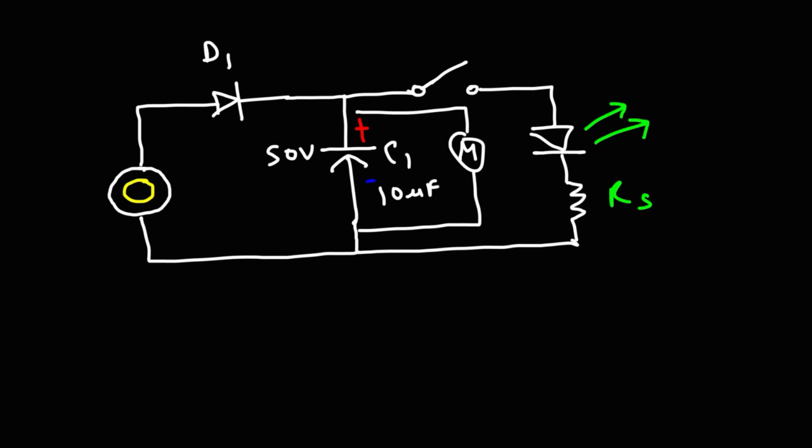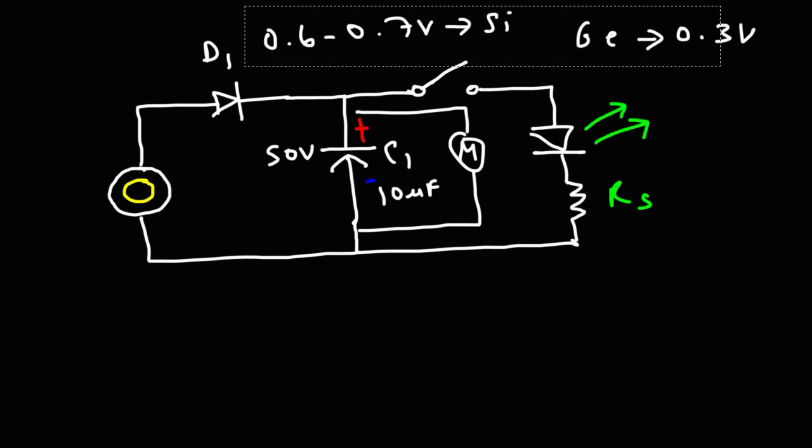Now the next thing that you want to consider is the type of diode that you're using. Because a silicon diode has a voltage drop of 0.6 to 0.7 volts, and that's an energy cost that you'll have to pay for. Now if you choose to use a germanium diode, the voltage drop of most germanium diodes are about 0.3 volts, so you'll use less energy with that type of diode.